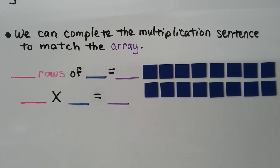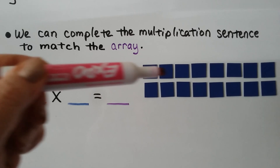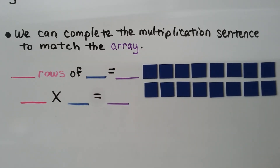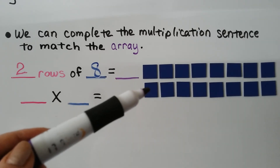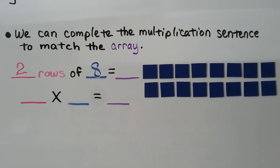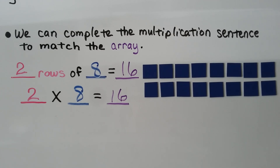We can complete the multiplication sentence to match the array. How many rows do we have? We have two rows. How many are in each row? We have eight in each row. We have eight and eight more, that's 16. Our multiplication sentence is two times eight is equal to 16.